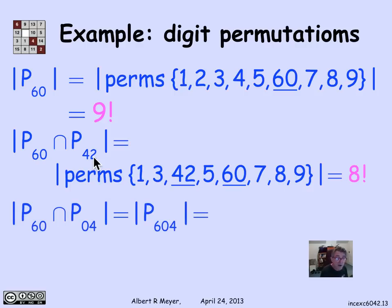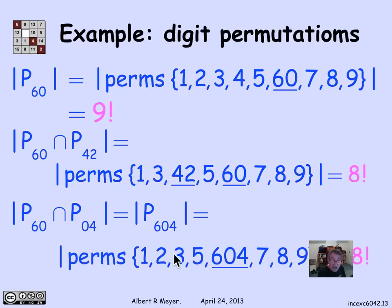For P60 ∩ P04, if a sequence has both a 6,0 and a 0,4, it necessarily contains the three-digit pattern 6,0,4. So P60 ∩ P04 is the set of sequences with pattern 6,0,4. Treating '6,0,4' as a single object plus the remaining 7 digits gives 8 objects total — again 8 factorial permutations. Similarly, P04 ∩ P42 corresponds to sequences with pattern 0,4,2, also 8 factorial.